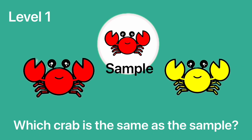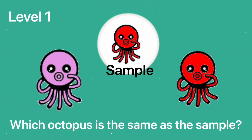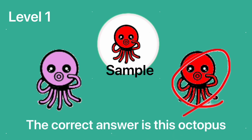Level 1. Which crab is the same as the sample? The correct answer is this crab. Level 1. Which octopus is the same as the sample? The correct answer is this octopus.